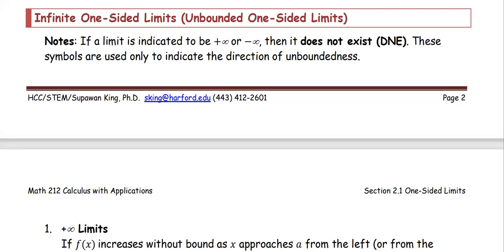In this part we are looking at infinite one-sided limits or the unbounded one-sided limits. Note that if a limit is indicated to be positive infinity or negative infinity, then it does not exist or DNE. These symbols are used only to indicate the direction of unboundedness.